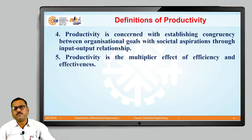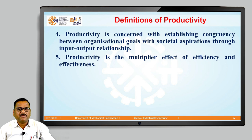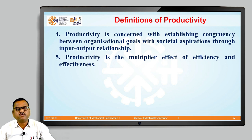The fifth definition of productivity is a simple one: productivity is just the multiplier effect of efficiency and effectiveness. That is really very important. When we multiply efficiency with effectiveness, we get the term we call productivity.